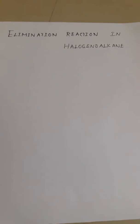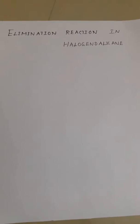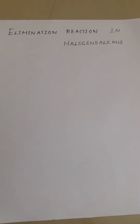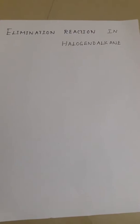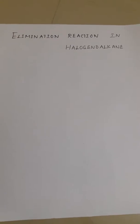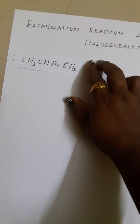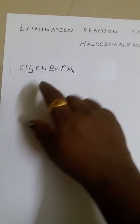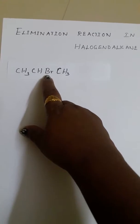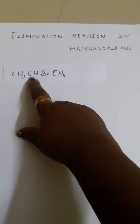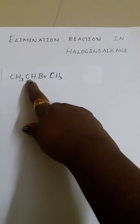Hi everyone, this is Jayanti Talapati from Gateway the Complete School. Today we are going to see the elimination reaction in halogeanoalkane. We are going to eliminate the halogen group from the alkane. For example, I am going to give you one example which is a secondary halogeanoalkane, because the bromine is bonded to a carbon that is connected to two other alkyl groups.